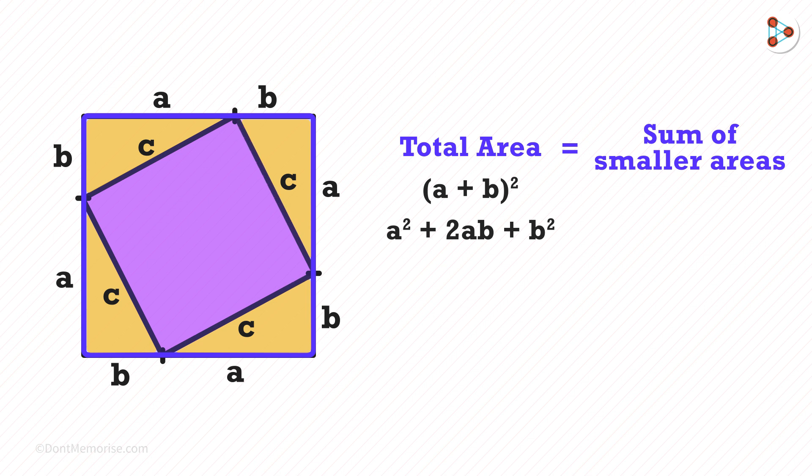The area of the square is c². And there are four triangles with areas one half times ab. Hence, the sum of the areas will be c² + 2ab.